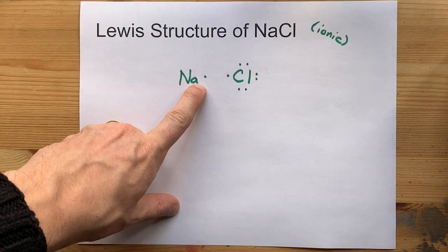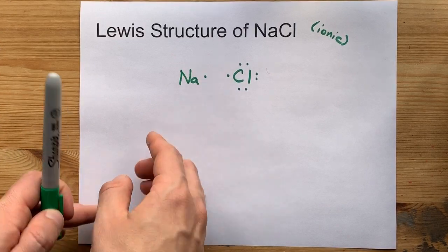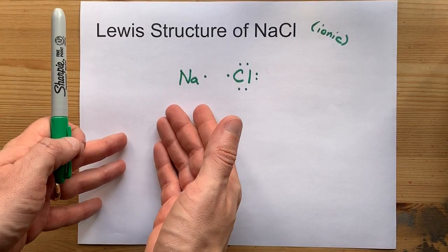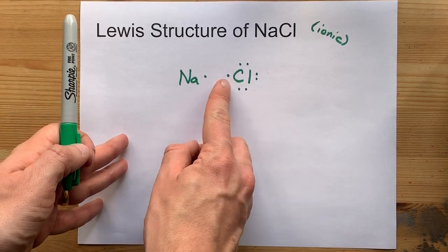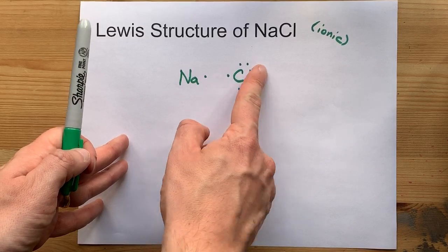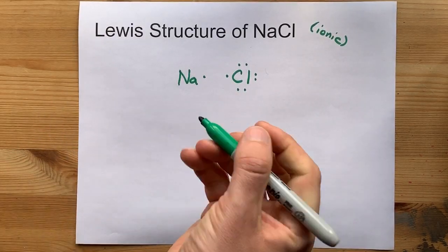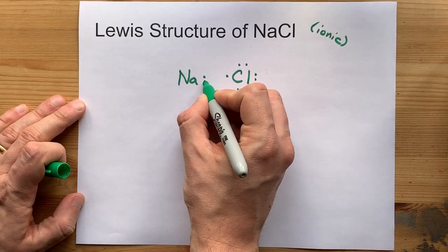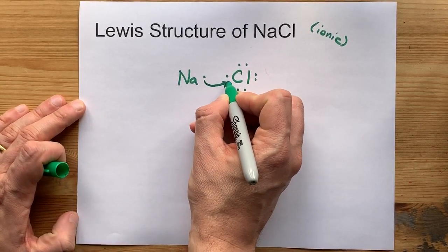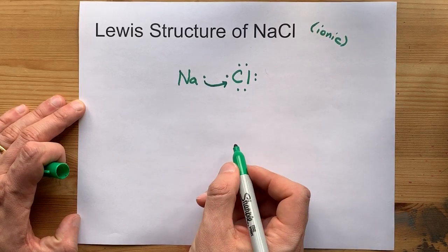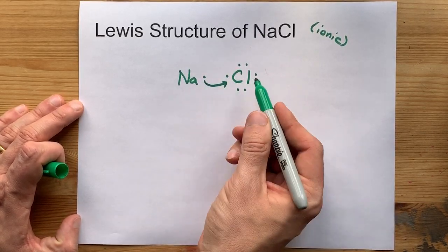Sodium would like to give away its one electron. That will give it an empty outer shell. Chlorine is one electron shy of having a full eight and satisfying its own octet rule. So what's easy here is that that one electron can move from sodium to chlorine and make both of the atoms happy.